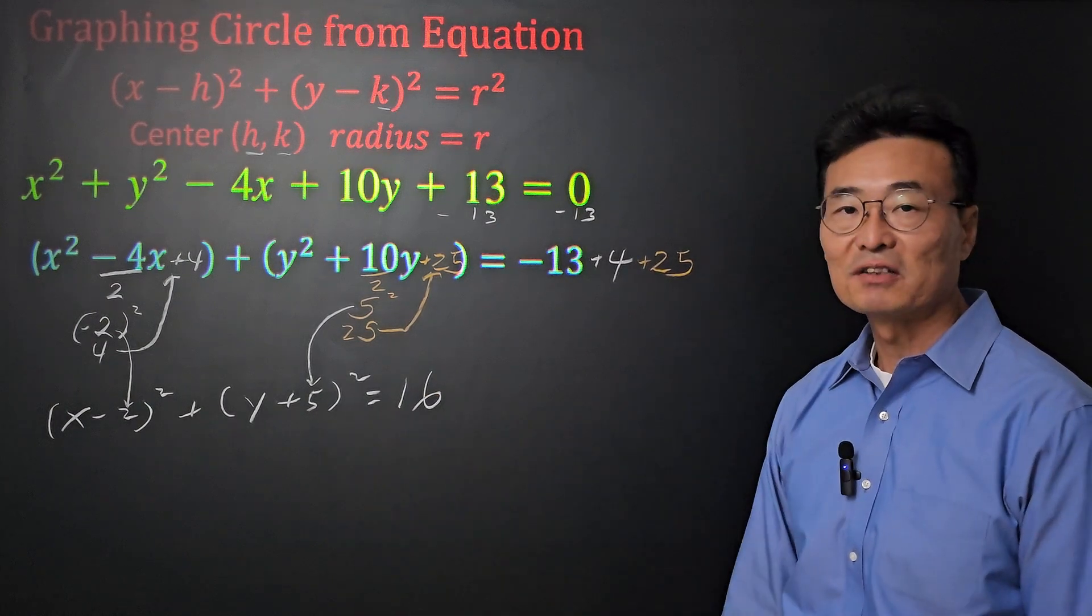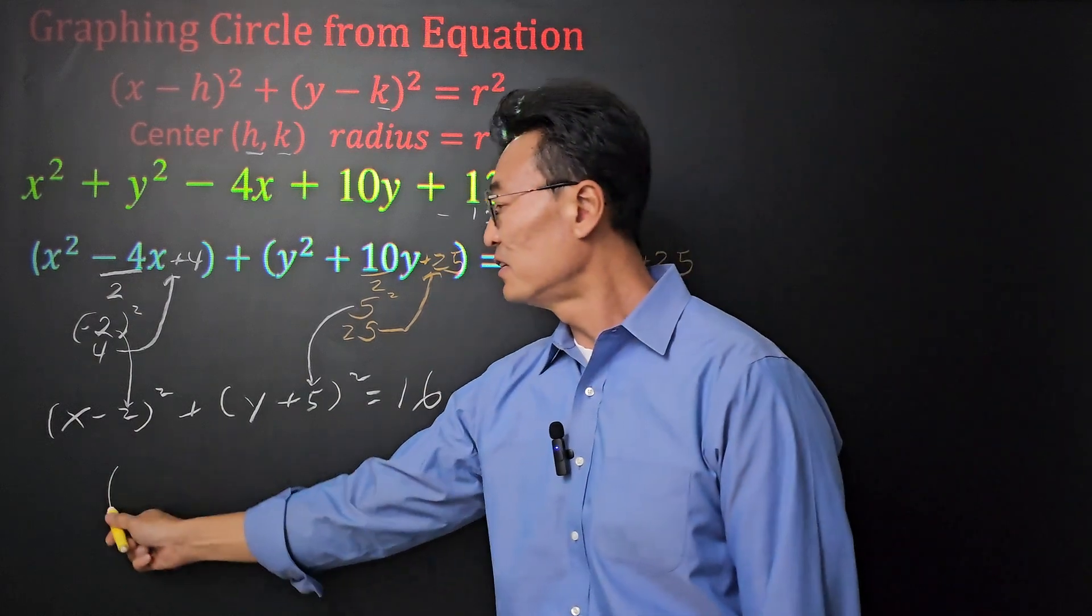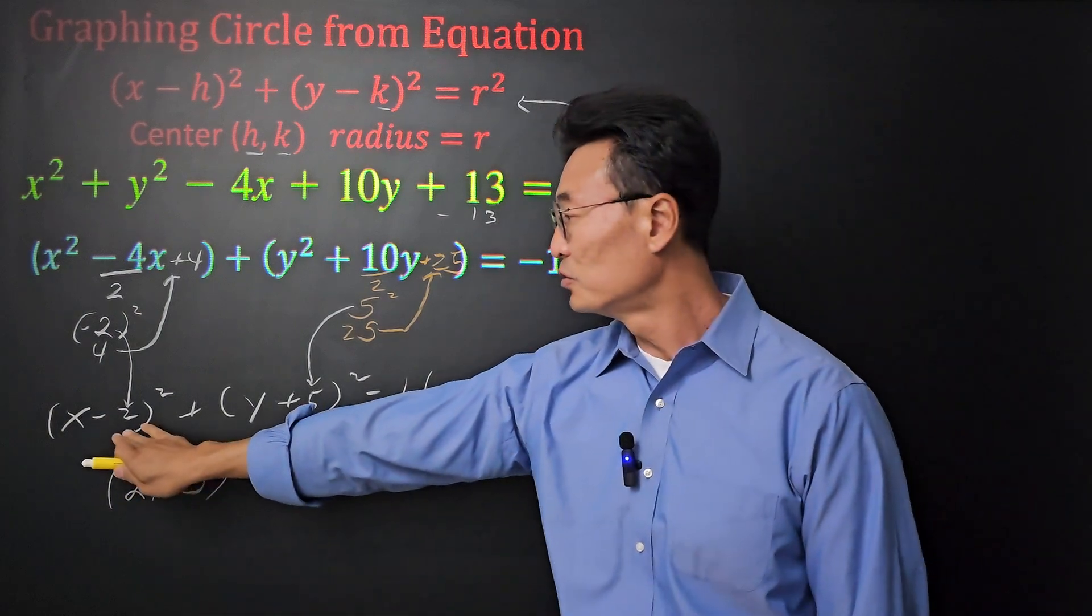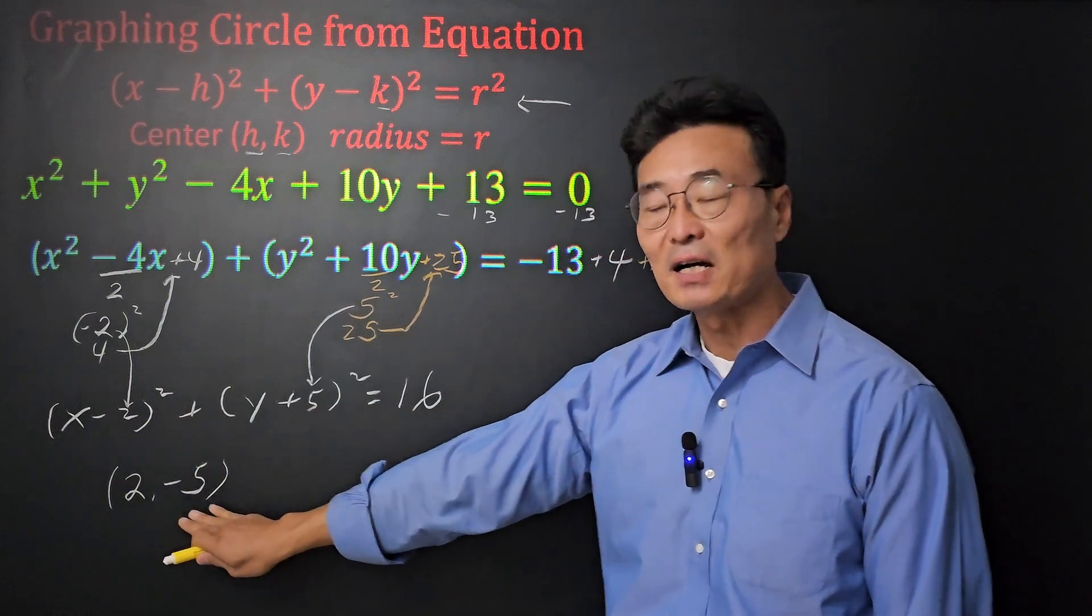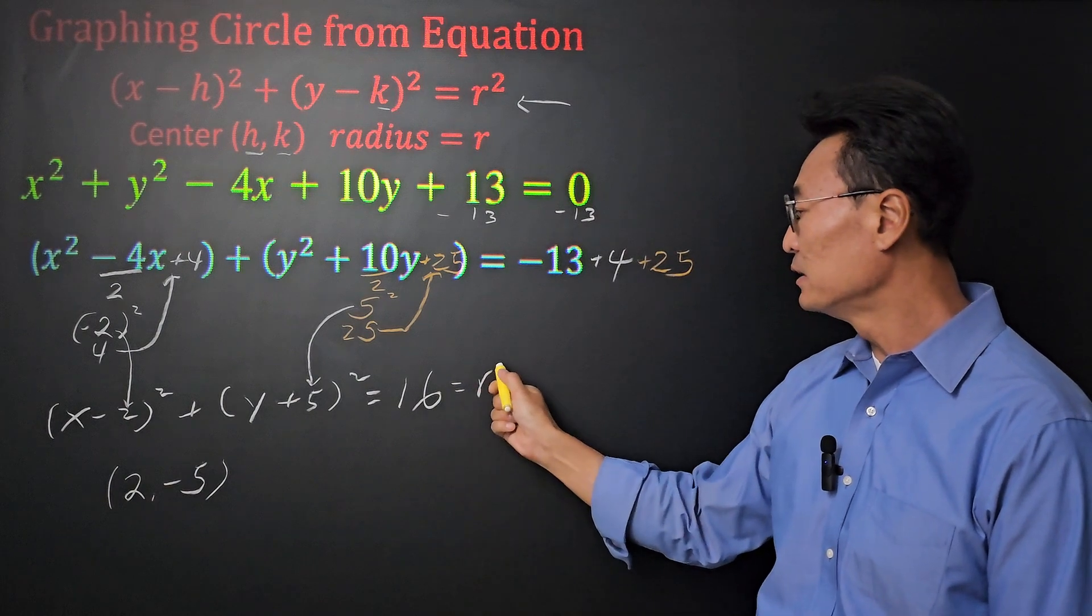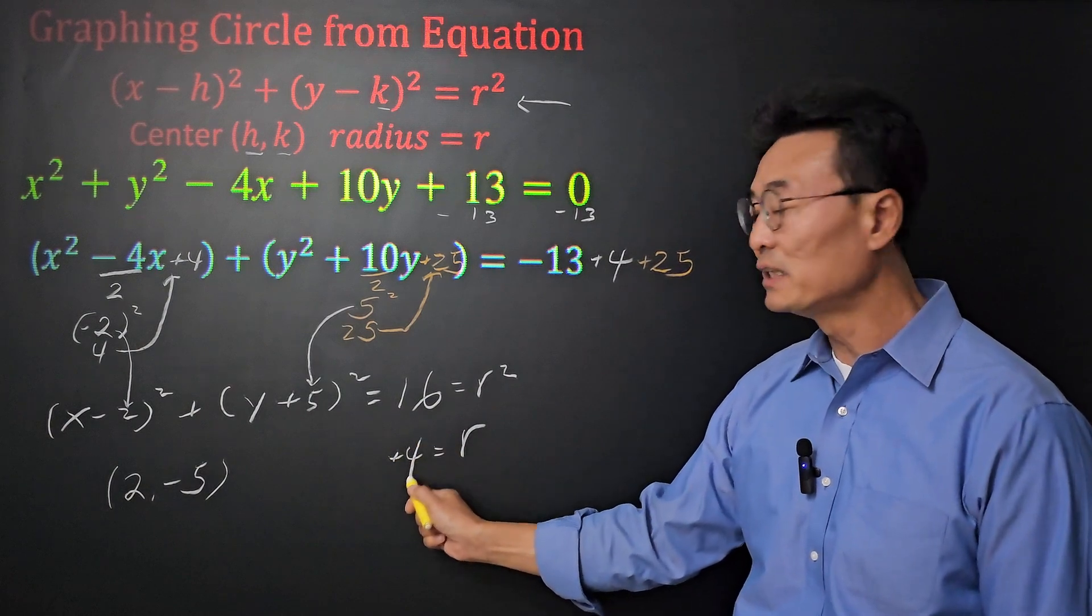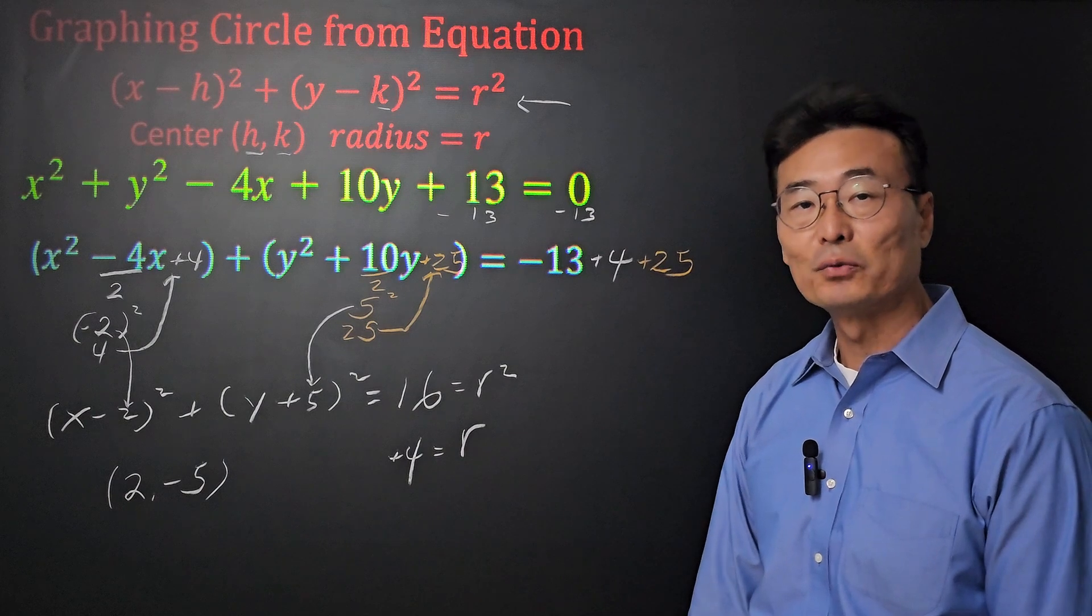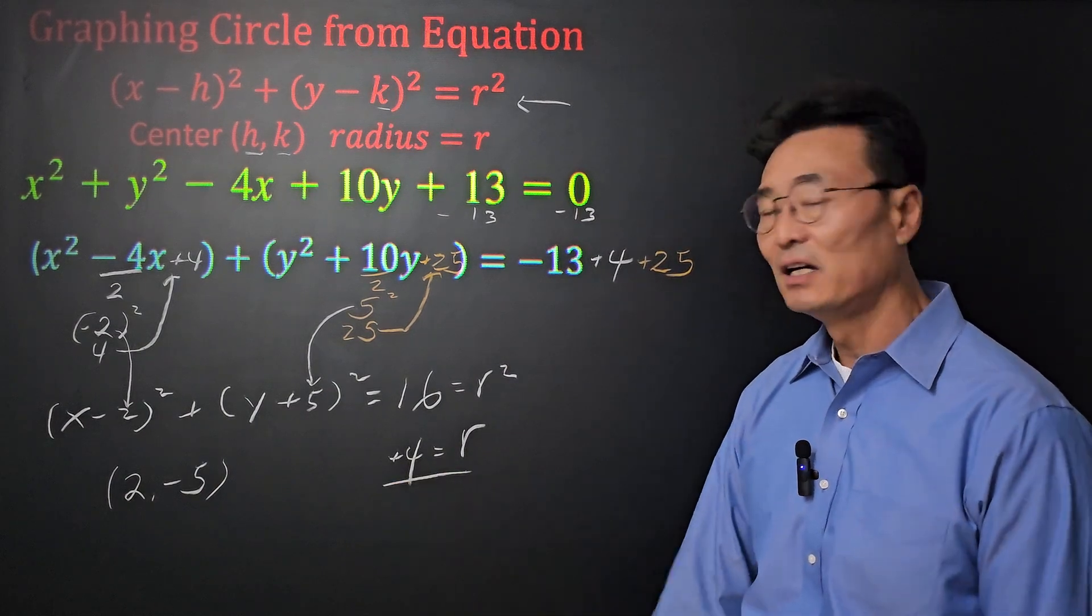Now that we have the equation in the standard form of a circle, we have the center as 2 and negative 5. Notice the 2 is opposite of negative 2, and of course the negative 5 is opposite of the plus 5 that we had. And since 16 equals r squared, r must be plus 4. Even though we're taking the square root, it can't be negative 4 for the radius, since the radius cannot be a negative value. So the radius is 4.